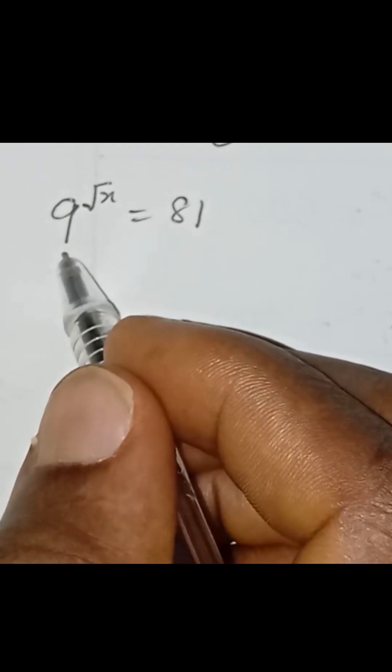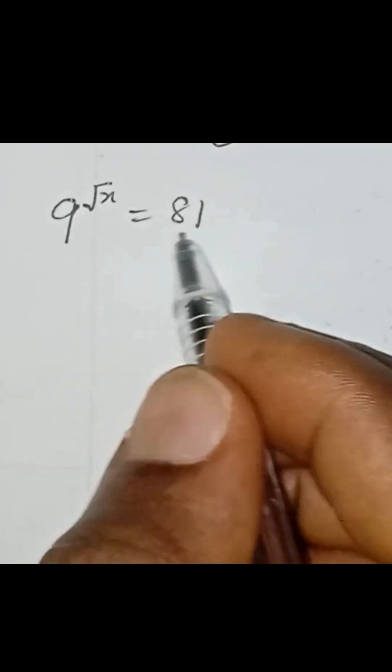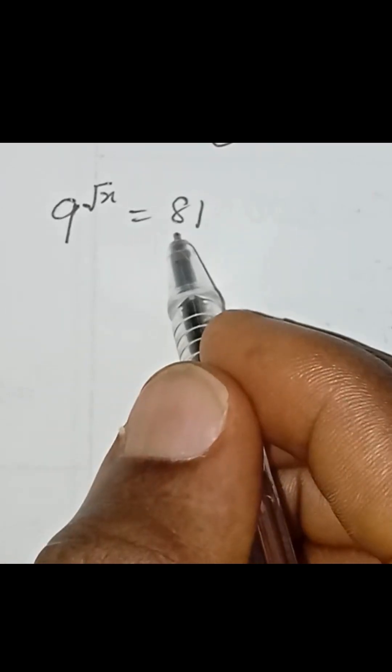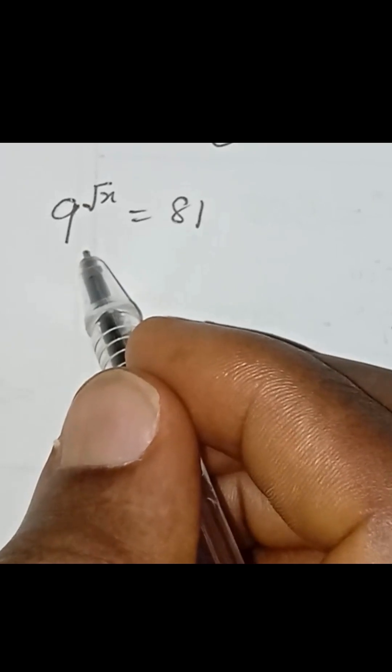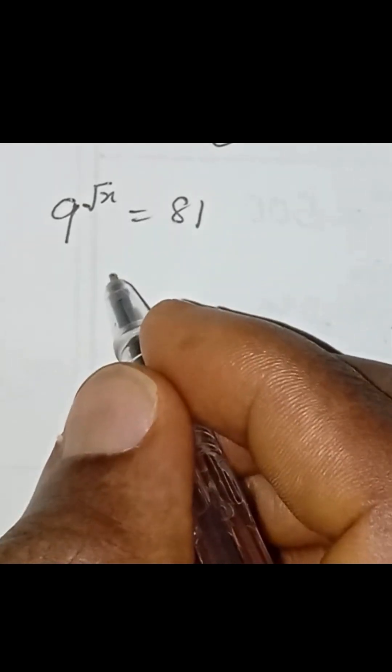What you need to do to solve for x is to consider putting both the left hand side and the right hand side at the same base. Then you solve for x.